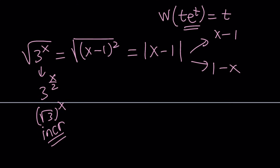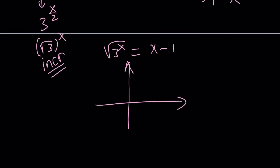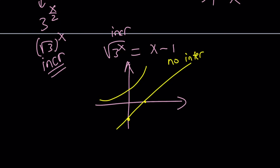Suppose √3^x equals x−1. Let's take a quick graphical look. This is an increasing exponential and x−1 is also increasing — will they intersect? The exponential looks like this, while x−1 is a line with slope one, y-intercept negative one, and x-intercept one. To keep a long story short, there is no intersection. You can also argue this using inequalities.